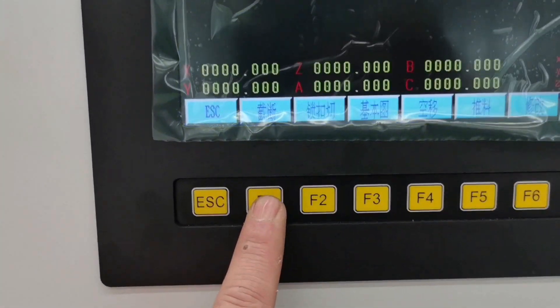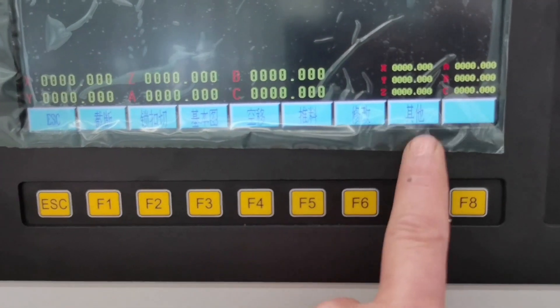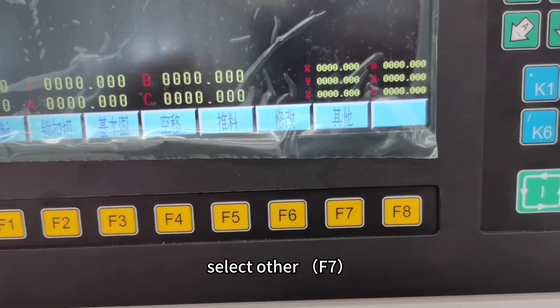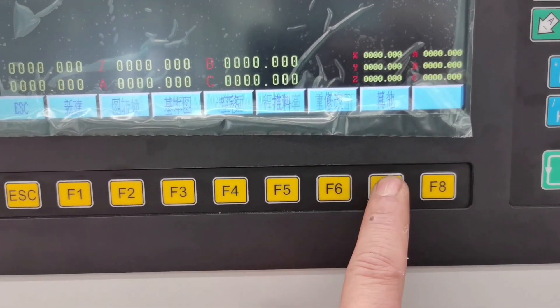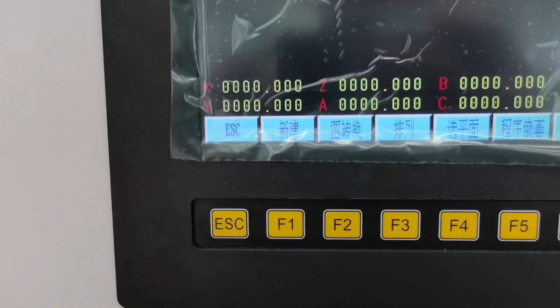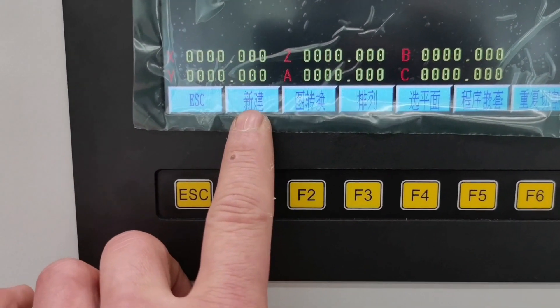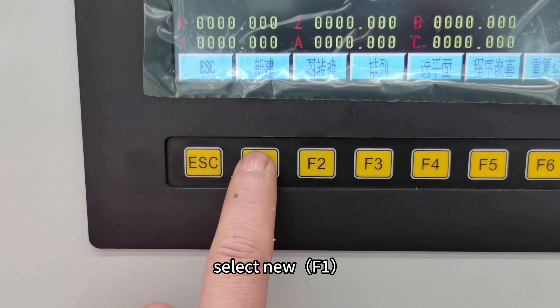H beam as an example. Select other F7 to build the basic drawing. Select new F1.